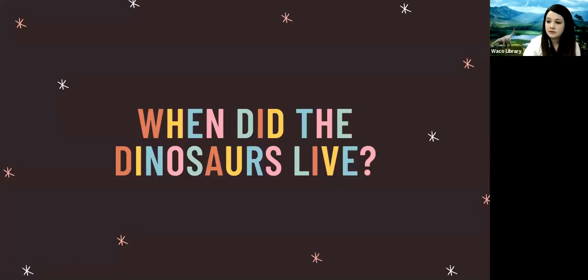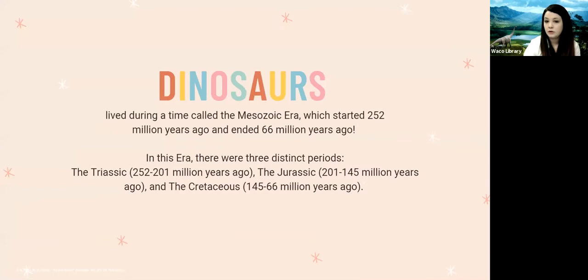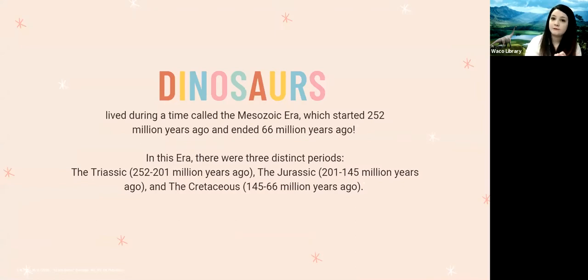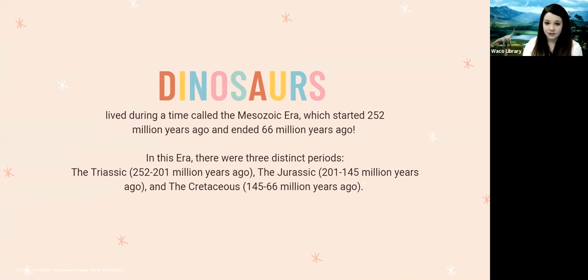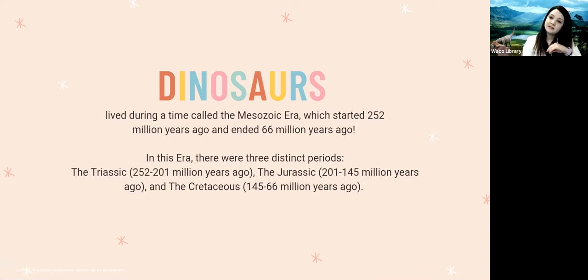And when did the dinosaurs live? Well, dinosaurs lived during a time called the Mesozoic era, which started 252 million years ago and ended 66 million years ago. And in this era, there were three distinct time periods: the Triassic, the Jurassic, and the Cretaceous.